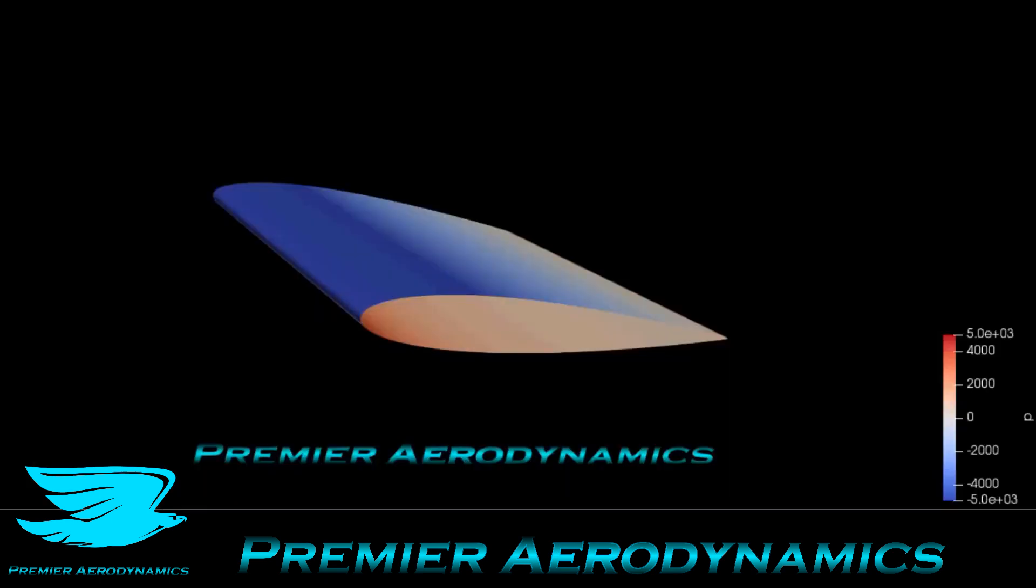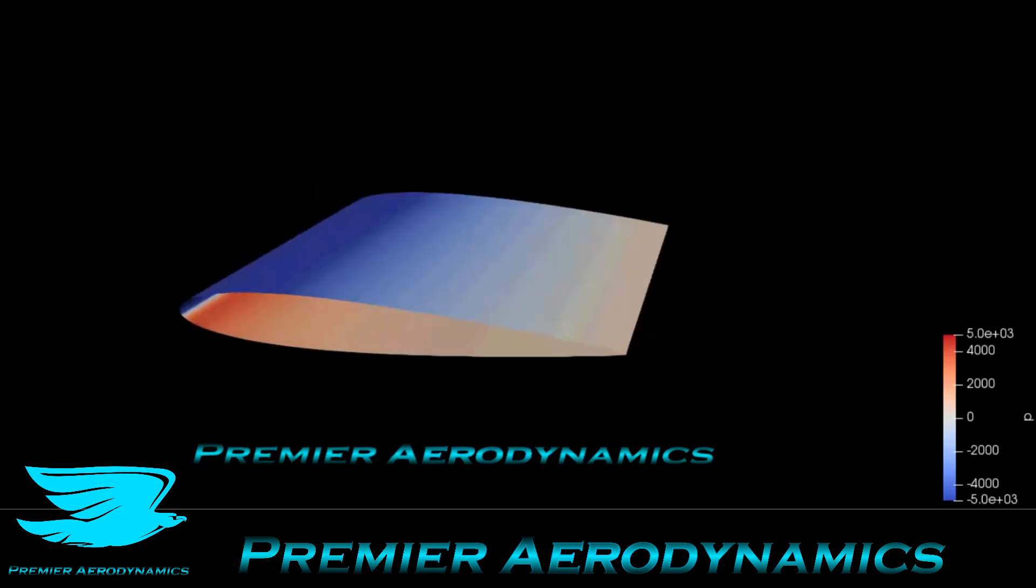This is the pressure distribution over the airfoil - effectively an infinite wing with no wingtip vortices, so there's no induced drag. The low pressure covers about 25% of the chord and recovers pretty quickly. Once it gets to about the 25-30% point, it recovers very quickly to about zero gauge.